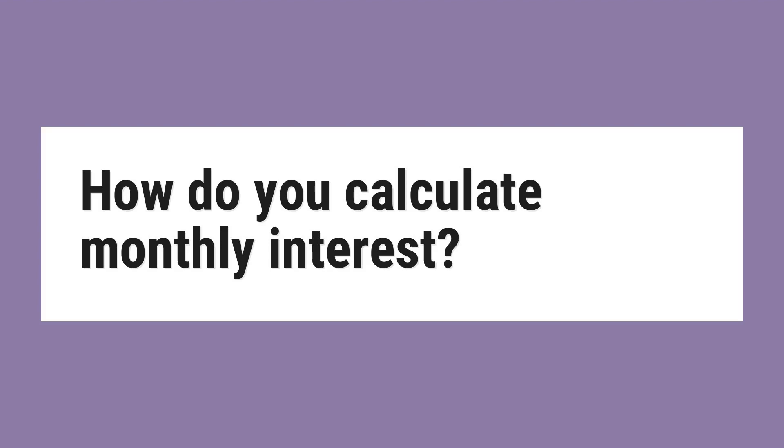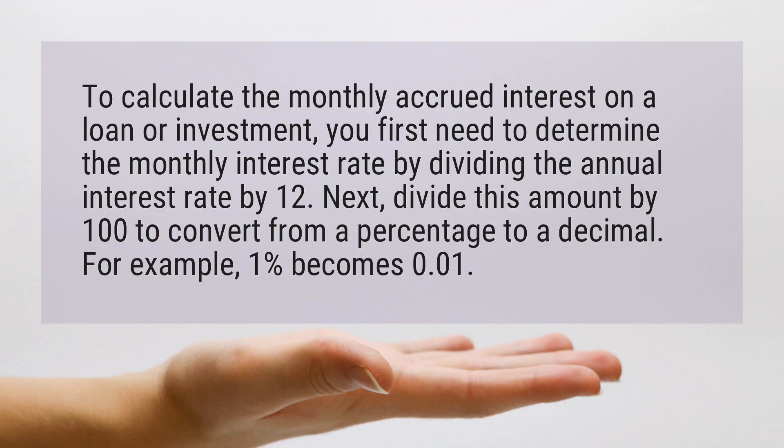How do you calculate monthly interest? To calculate the monthly accrued interest on a loan or investment, you first need to determine the monthly interest rate by dividing the annual interest rate by 12. Next, divide this amount by 100 to convert from a percentage to a decimal. For example, 1% becomes 0.01.